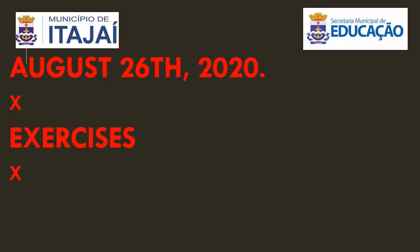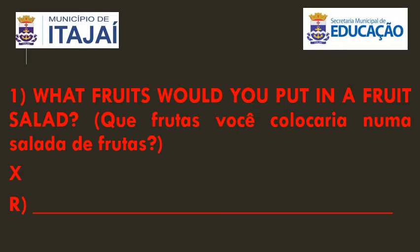A teacher quer que você pegue o seu caderno. Na primeira folha em branco, copie a data de hoje. Olha lá: August 26th, 2020. Pula uma linha. Escreve Exercises. Pula mais uma linha. Aí coloca lá: Número 1.